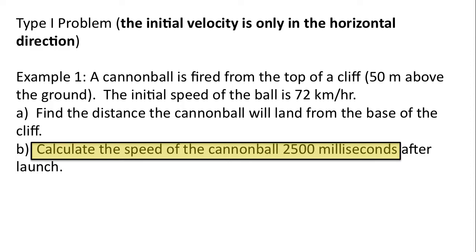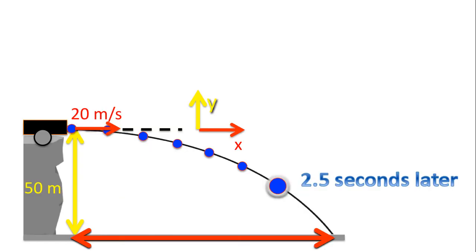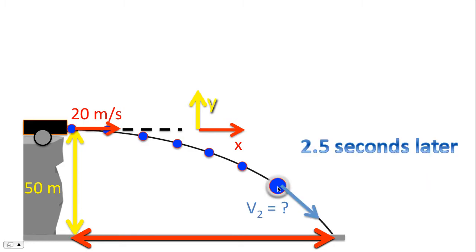The next part of the question was to calculate the speed of the cannonball 2500 milliseconds after launch. 2500 milliseconds is 2.5 seconds. And so a little later on, we'll say that the ball is approximately here, 2.5 seconds later. And we need to solve for the velocity, or the speed ultimately. And so we draw our vector, and we break that vector apart into an X and a Y component.